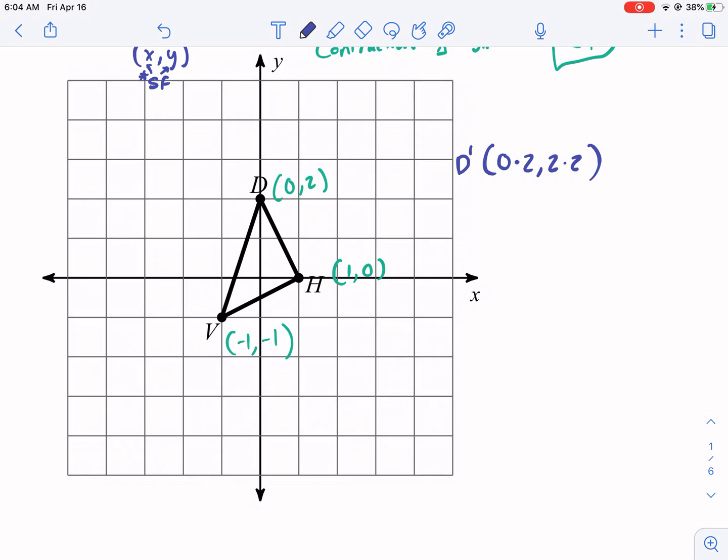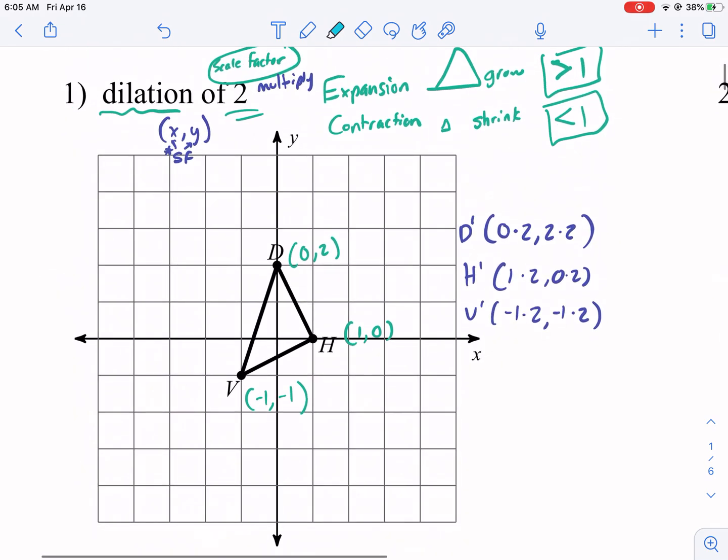And I'm going to write it off to the side first before plotting it. For h prime, we're going to do 1 times 2 and then 0 times 2. And then for v prime, all these primes are at the new location, by the way. So negative 1 times 2 and negative 1 times 2. I'm going to highlight the scale factor. So their scale factor, dilation of 2, that's where that 2 comes from. We multiply the x and y coordinates of each by that scale factor.